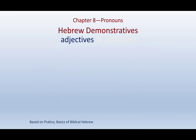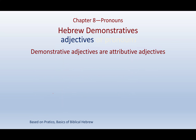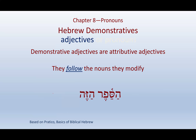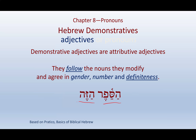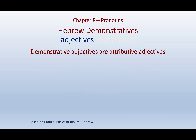Hebrew demonstratives can act as adjectives — demonstrative adjectives or attributive adjectives. They follow the nouns they modify. For example: HaSefer haze — 'the book, the this-one' — this book. They agree in gender, number, and definiteness. HaIsh haze — both have the article, both are masculine singular — 'this man.' For HaIshah hazot — we go to Zot because Ishah is feminine, still with the article. The aleph is a guttural so it rejects the dagesh and we get compensatory lengthening.